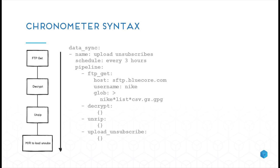Here is a sample syntax of a Chronometer job. The schedule is every three hours. This is a YAML format — think of it as a JSON dictionary. It has a pipeline, which is an ordered list of steps. The first step gets a file from FTP — that's the source. Then we do a bunch of transforms: decrypt it, unzip it, and then upload the unsubscribe list, which actually runs a MapReduce.